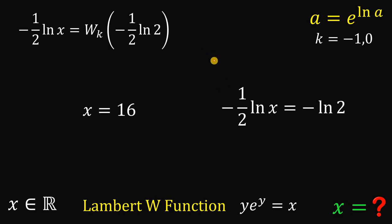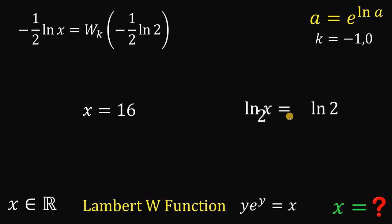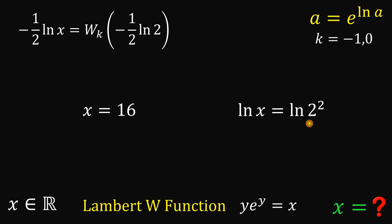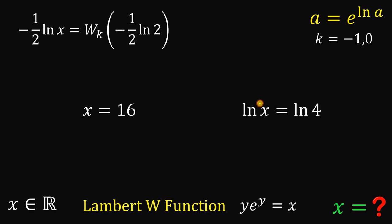For the second case, multiply both sides by −2 again. We get ln(x) = 2·ln(2). Putting the 2 in the exponent of 2, we get ln(x) = ln(2²) = ln(4). Therefore x = 4. That is our second value.